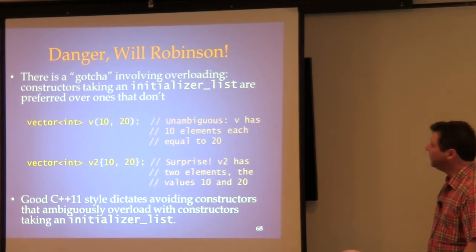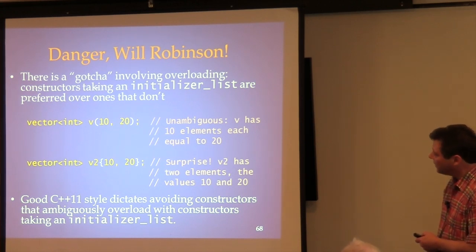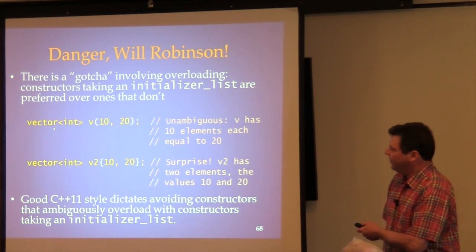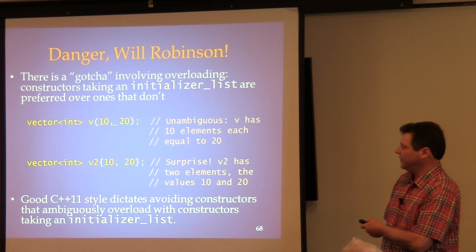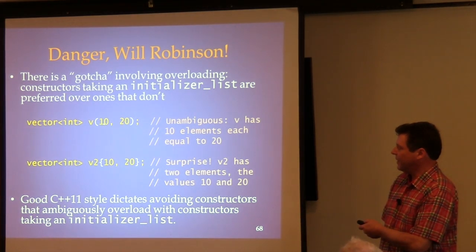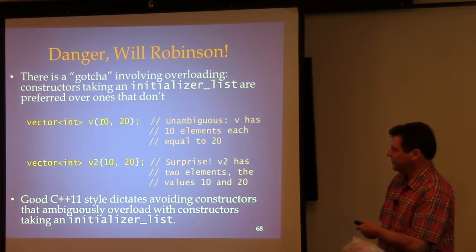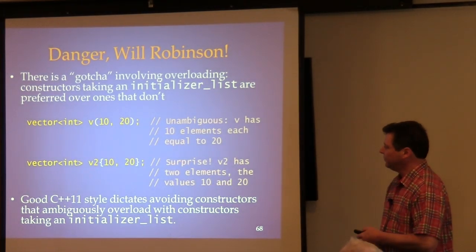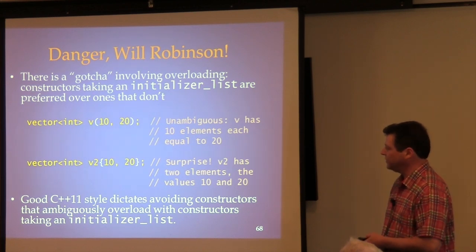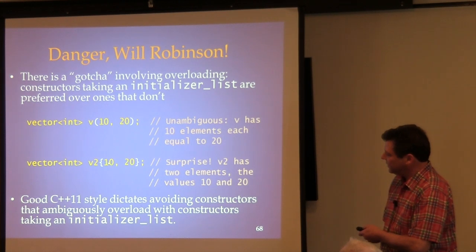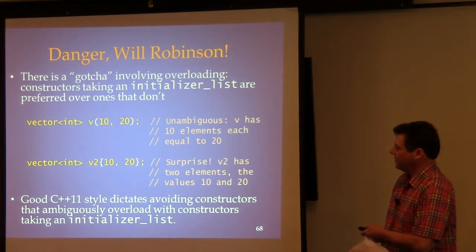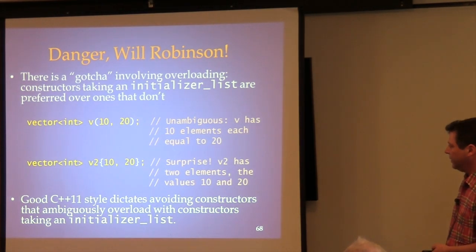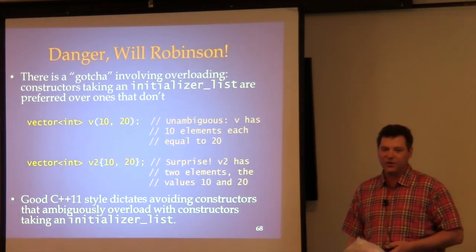Now the gotchas. Constructors that take an initializer list are preferred over ones that don't, so if the compiler can't tell, it assumes it's an initializer list. The vector has a constructor taking a count and a value. If you try to use braces instead of parentheses to call that constructor, the compiler sees a two-element initializer list instead, and you get a vector with two elements — 10 and 20 — which is perfectly legal but wrong.